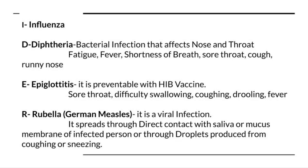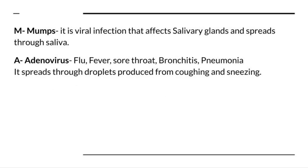R stands for rubella and roseola, also known as German measles. It is a viral infection that spreads through direct contact with saliva or mucous membrane of an infected person, or respiratory droplets from coughing and sneezing. M stands for mumps, a viral infection that affects the respiratory tract and spreads through saliva. A stands for adenovirus, where the patient will have flu-like symptoms — fever, cough, pneumonia, bronchitis — spreading through respiratory droplets from coughing and sneezing.